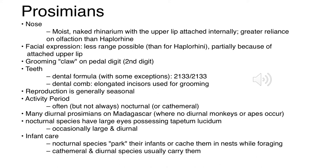Nocturnal species have large eyes and possess a tapetum lucidum - a reflective film in their eyes. If you've seen a deer at night or a cat in the dark with reflective eyes, that's the tapetum lucidum. Our prosimians still have this, but our Haplorhines do not - even nocturnal Haplorhines lack it. It's strictly in our Strepsirrhines, another characteristic more mammalian than primate.